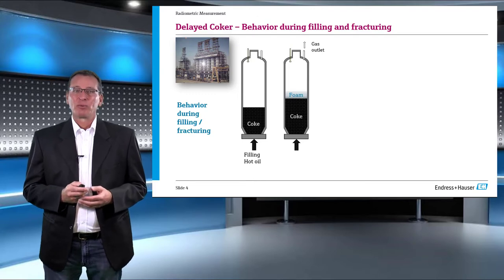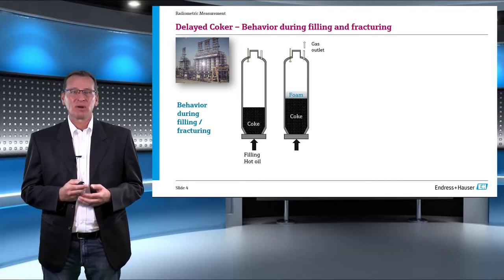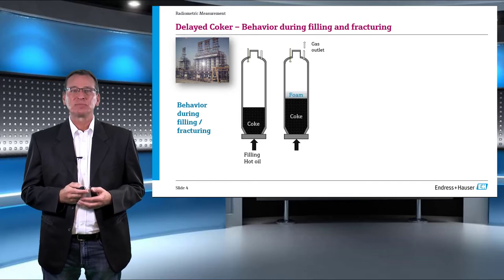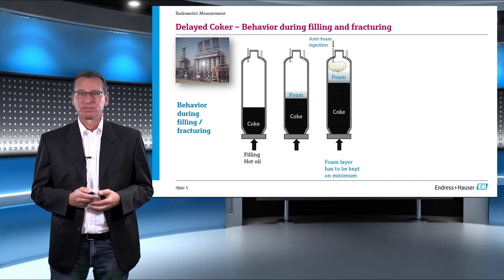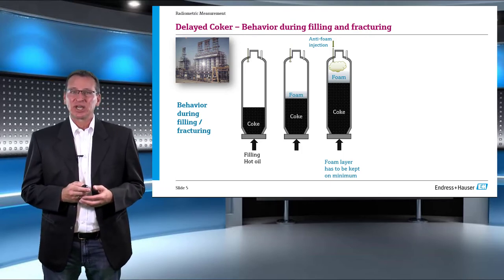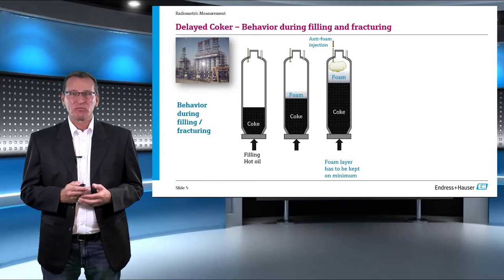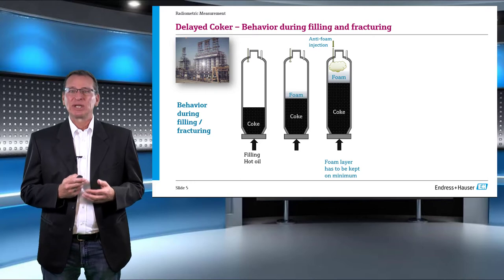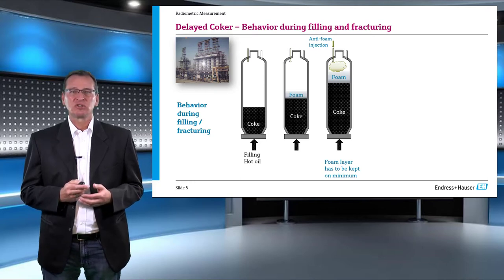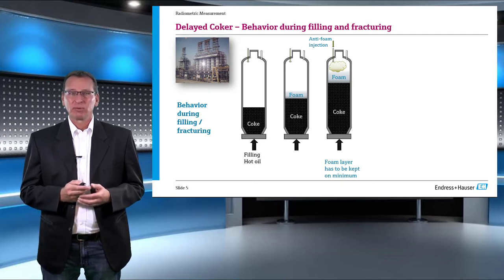The main target of an operation in a delayed coker unit is to have a maximum level of coker in the drum with the least possible foam layer. To this effect, an anti-foam agent is injected from the top to subside the foam layer. To keep the cost of operation minimum, it is absolutely critical to time the dosage and quantity of this agent.